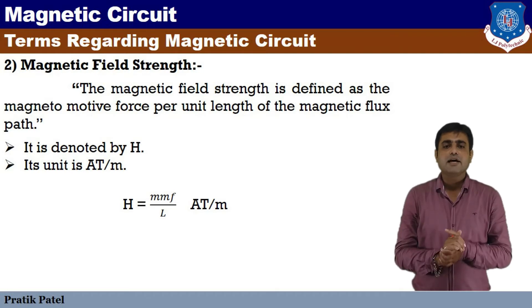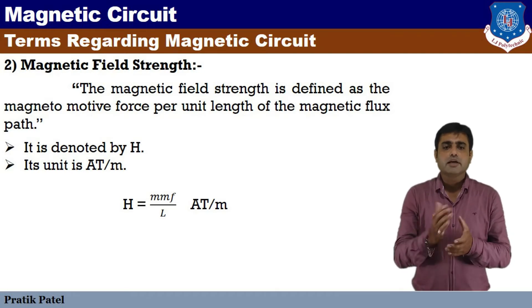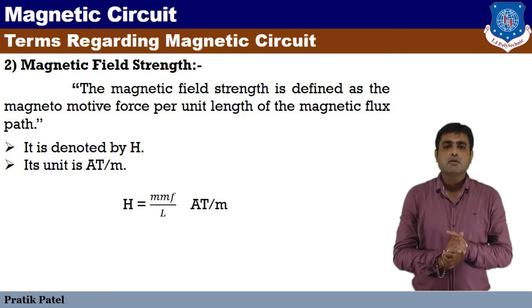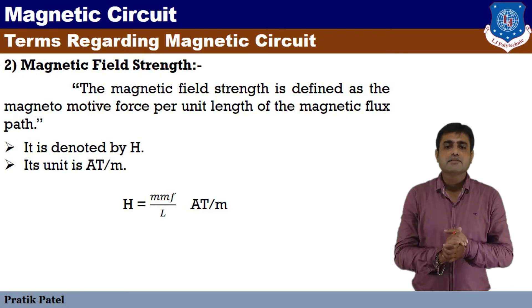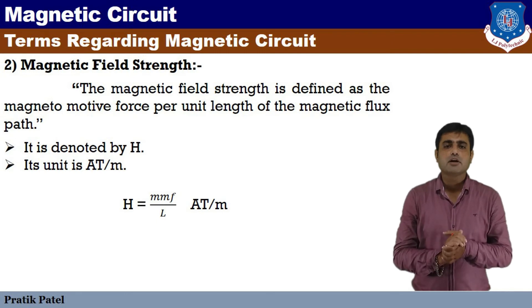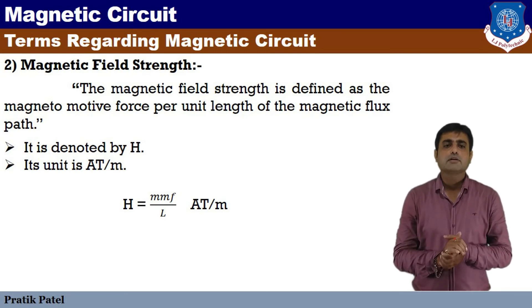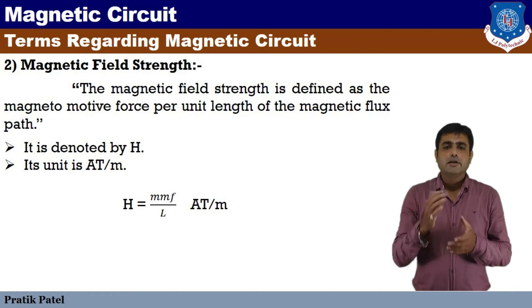The unit of MMF is Ampere-turns, and the length unit is meters, so the unit of magnetic field strength H is Ampere-turns per meter. This is a very important term.